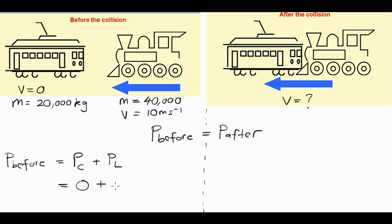The locomotive, however, has got a mass of 40,000 and a velocity of 10, which means the total momentum before the collision is going to be 40,000 times 10, which is 400,000 kilograms meters per second.